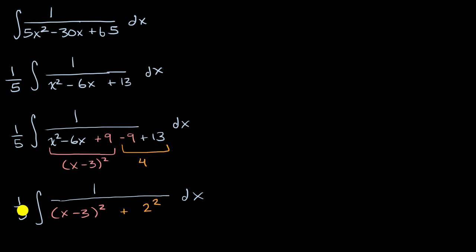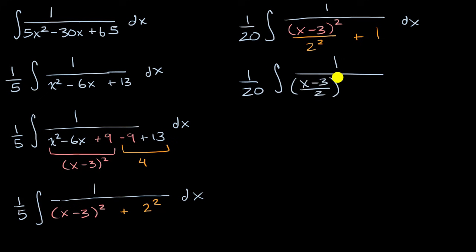If we do that, then this is going to become one-fifth times one-fourth, which is going to be one-twentieth times the integral of one over x minus three squared over two squared plus one dx. And then we could write this as one-twentieth times the integral of one over x minus three over two squared plus one dx.